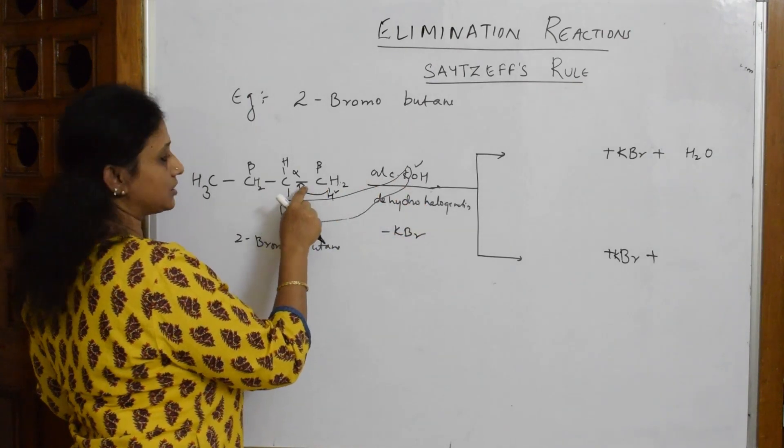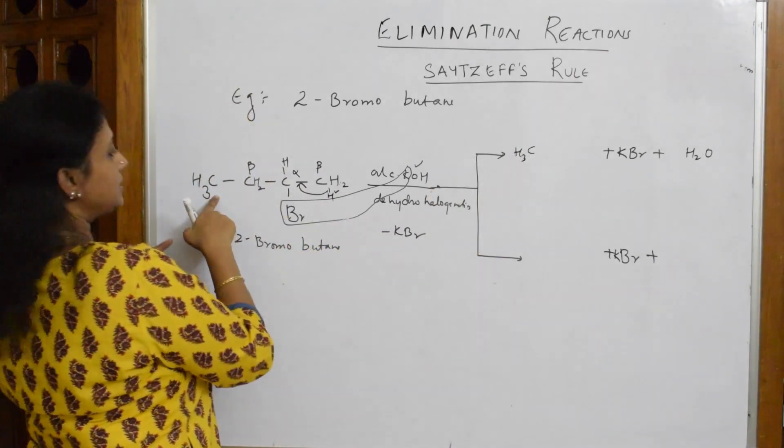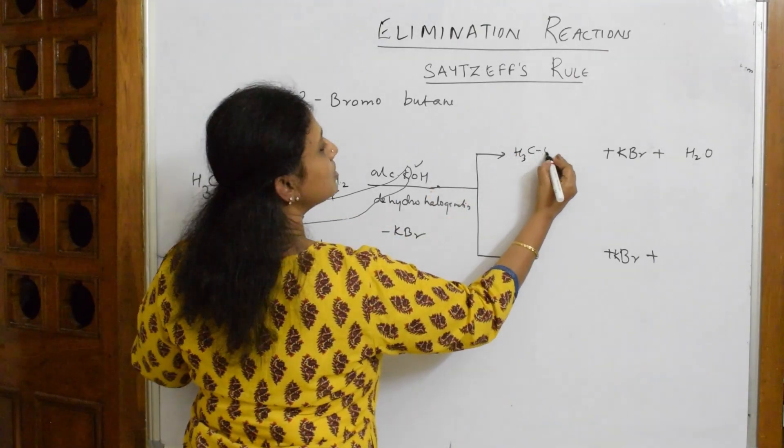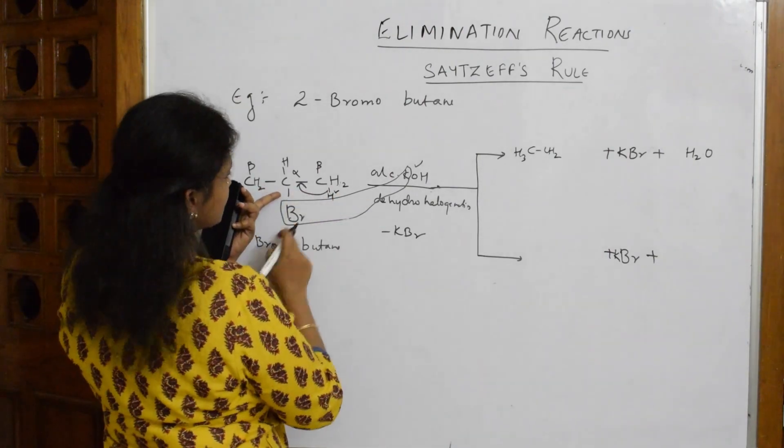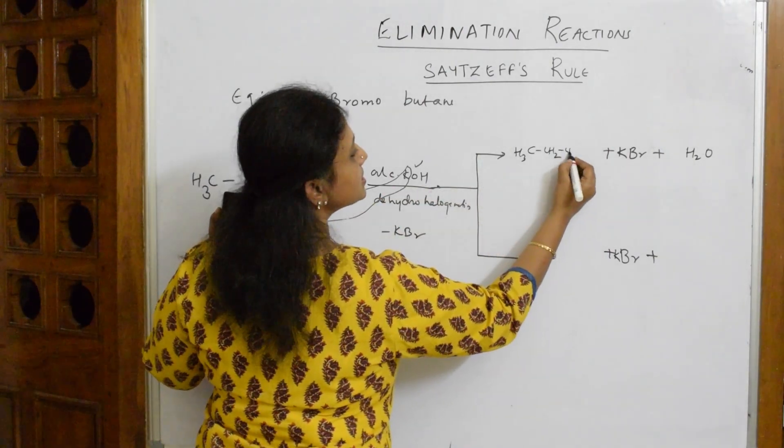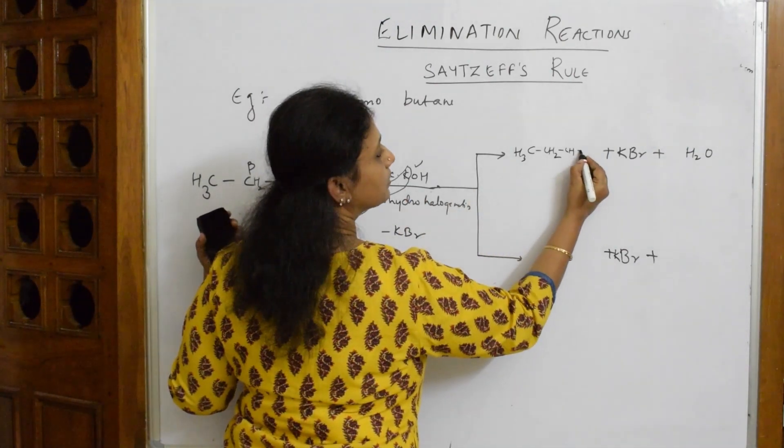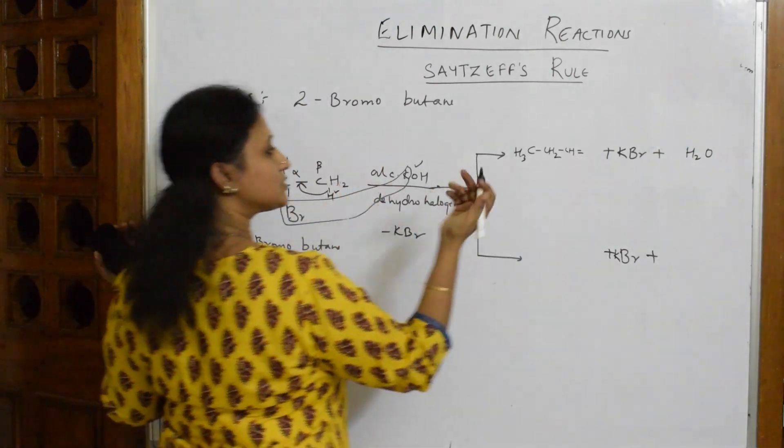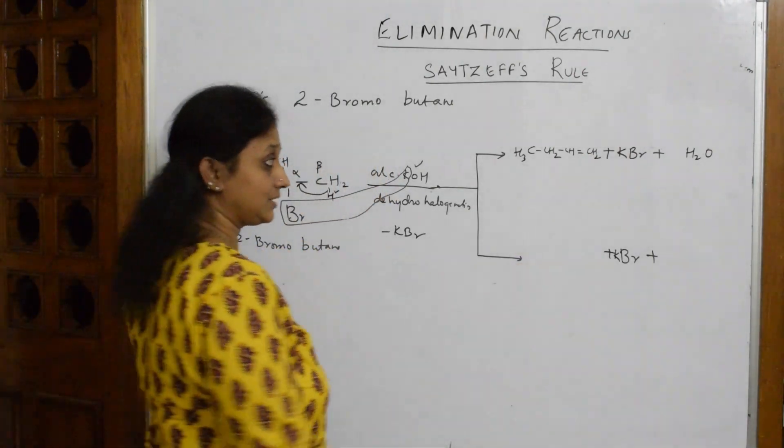And this bond has shifted here. Now how does this alkene look? CH3, single bond CH2. Now this one has lost Br, so this is CH, double bond, CH2. What type of alkene did I get? This is 1-butene, I have got 1-butene.